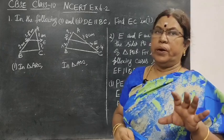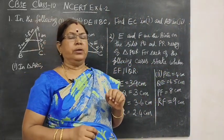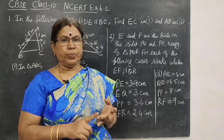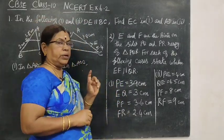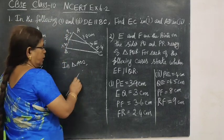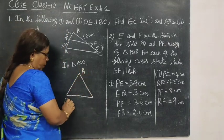This is basic proportionality theorem, BPT in short. In the basic proportionality theorem, in a triangle, this is a triangle named as ABC.